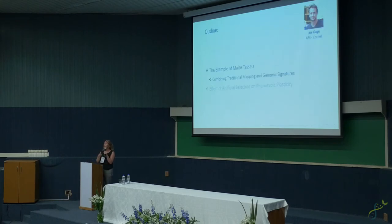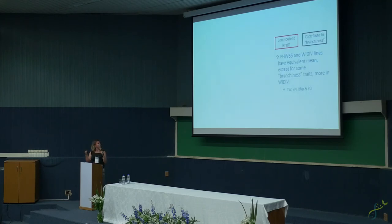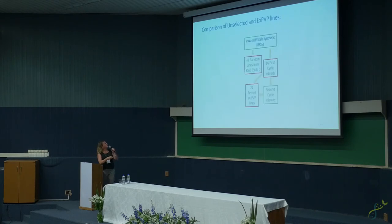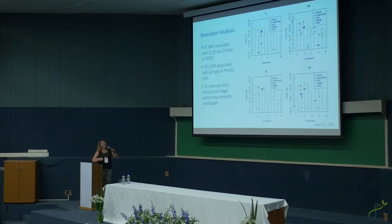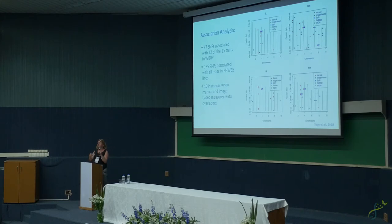We took all the data and ran a typical GWAS analysis. We ended up with about 87 SNPs associated with 12 of the 15 traits in the Wisconsin diversity panel, and about 155 SNPs associated with traits in PHW65. With so many regions to follow up on, one of the things we wanted to do was take all this information and figure out what is really meaningful — and that's why we went back to the selection signature idea.